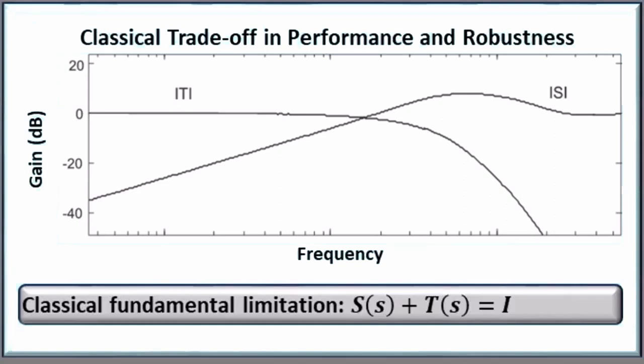characterized by S, or the sensitivity transfer function, with the logarithmic sensitivity, inverse to the robustness, and characterized by T, or the complementary sensitivity transfer function. As the identity S plus T equals I reveals, we can't have the best of both worlds. The better the performance, the more the robustness suffers.